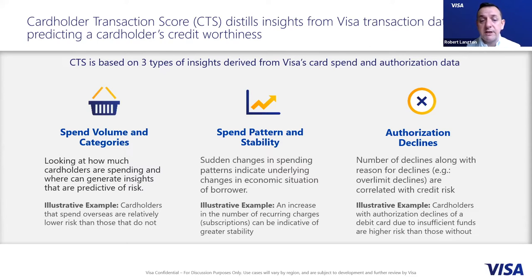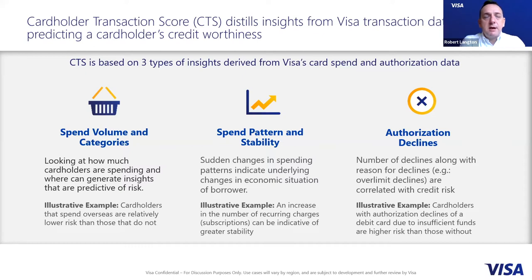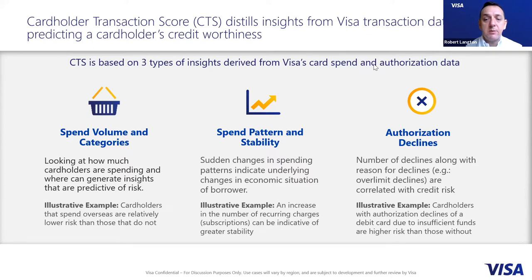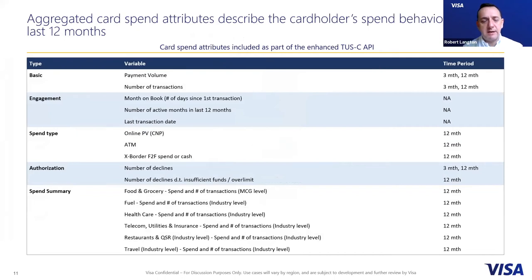Individuals with a higher number of recurring charges or subscriptions indicate greater stability. At Visa, we see more and more subscriptions year on year as consumers move more toward e-commerce-driven media consumption — subscriptions for services like Spotify, Amazon, Netflix, and other streaming services. The third and final key indicator of risk we can see is authorization declines, where a payment is declined. We pay particular attention to declines due to insufficient funds, which is indicative of poor customer management.